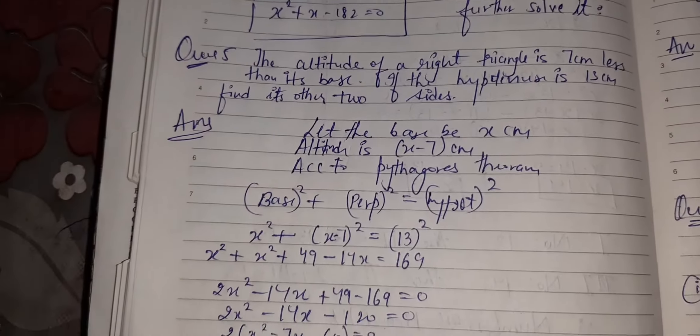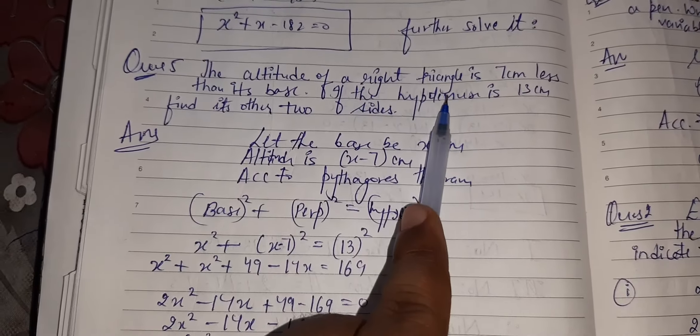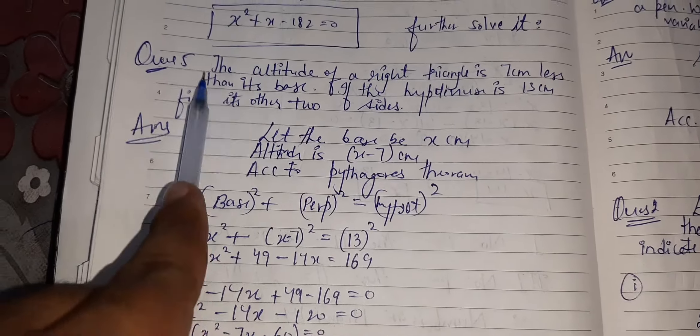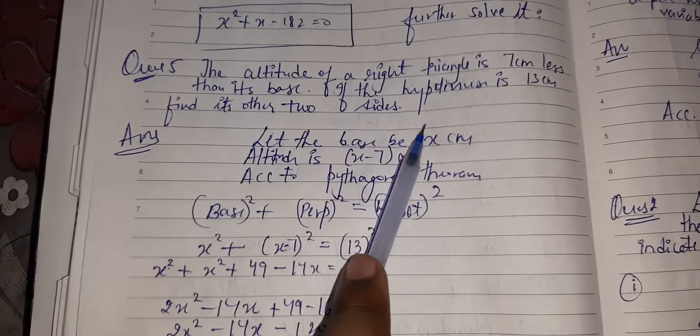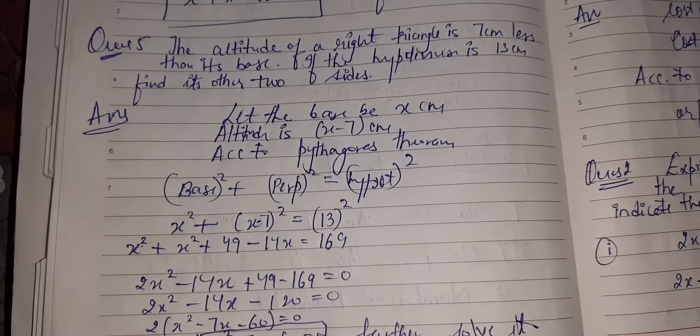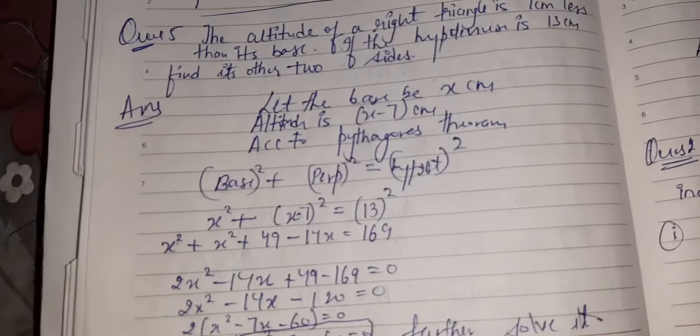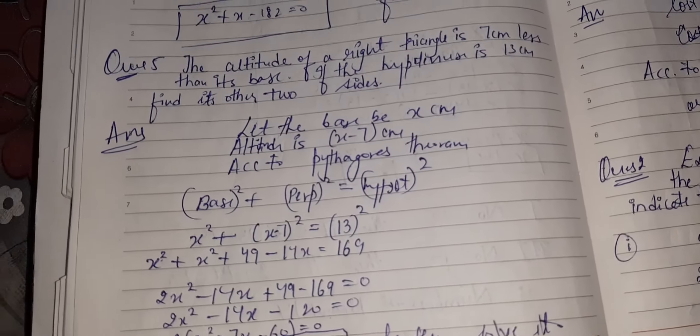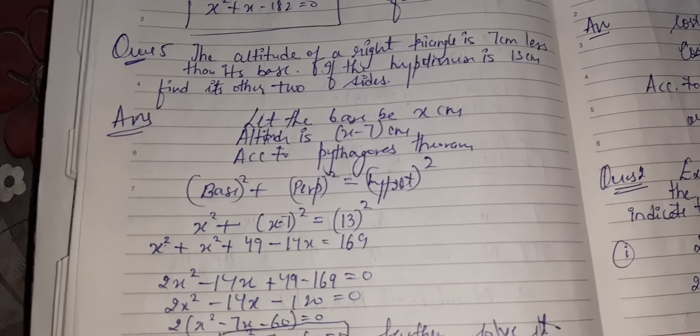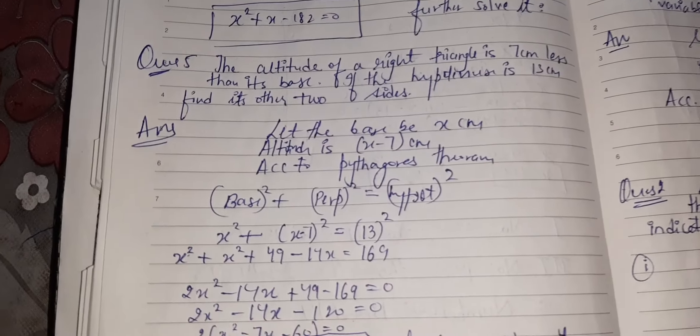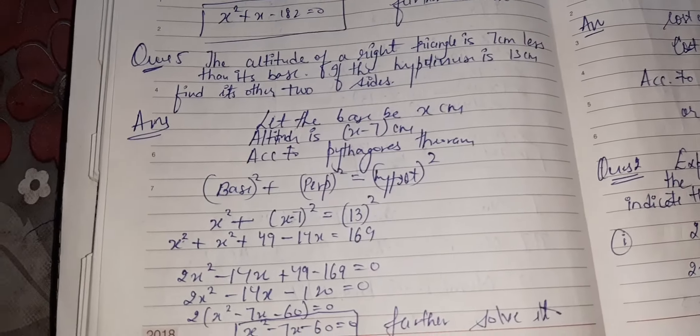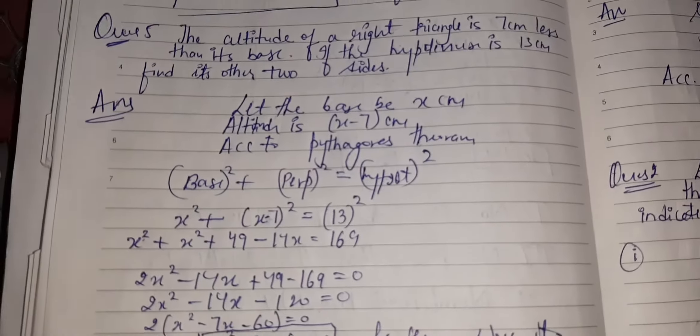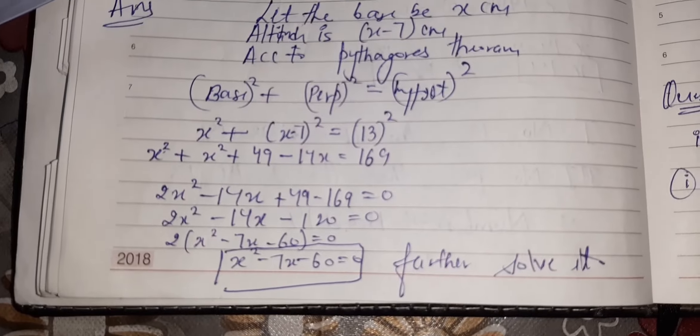The next question: the altitude of a right triangle is 7 cm less than its base. If the hypotenuse is 13 cm, find its other two sides. A very interesting question. Let base be x and altitude is x - 7. It is given in the question. Pythagoras theorem applies: b² + p² = h², that is base, perpendicular, and hypotenuse.